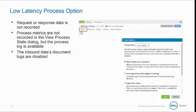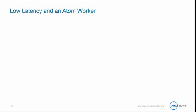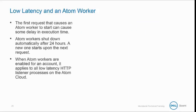The inbound data's document logs are disabled. The low latency option for processes often increases the speed a process executes, but it does so at the expense of logging the various process states. This allows the process to execute mainly in memory, where transformations and other steps can execute quickly.